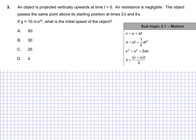Well, let's start drawing and sketching our scenario. And hopefully we can figure out what's going on. So we have an object being projected vertically upwards at a time zero. So let's say the object begins here. This is at time zero. And well, air resistance is negligible, thankfully, the object passes the same point above its starting position.